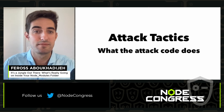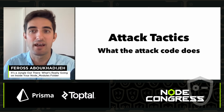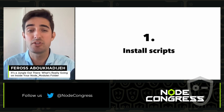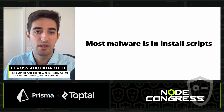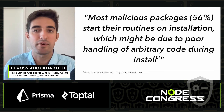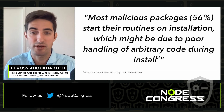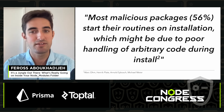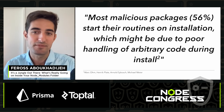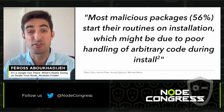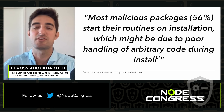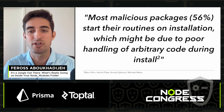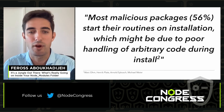Now let's talk about attack tactics — what the attack code actually does. Install scripts are a huge vector; most malware is in install scripts. A research paper found that 56% of malicious packages start their routines upon installation. NPM allows packages to say "when this package is installed, run some code" — and unfortunately, install scripts do have some legitimate uses so we can't just disable them. We also see packages using privileged APIs — accessing the network, the file system, and environment variables — because attackers want to steal secrets and need the network to exfiltrate them.